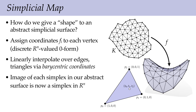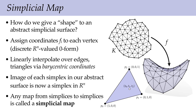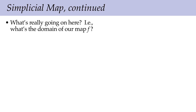The high-level idea is that each simplex in our abstract simplicial complex is now a concrete geometric simplex in R^n, typically R^3. Any map from simplices to simplices is called a simplicial map, so f is a simplicial map from our abstract simplicial complex into three-dimensional space. To be precise about the domain of f: when talking about smooth surfaces the domain was a region of the plane, but with an abstract simplicial complex we have a more abstract set-of-sets structure.